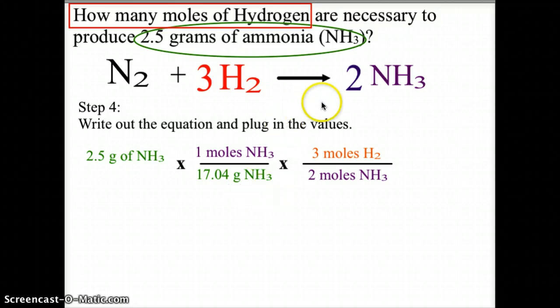Using the balanced chemical equation, we then find the conversion factor of moles of hydrogen to moles of ammonia, and in this case it's a 3 to 2 ratio. Three hydrogen moles are necessary to produce every two moles of ammonia. And then, once we have our equation set up with the proper conversion factors, we can then cancel out our units.